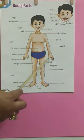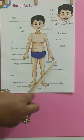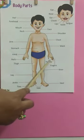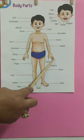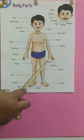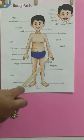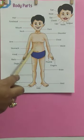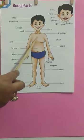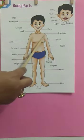Our hands consist of five digits. These five digits are four fingers and one thumb. Then we have our arms joined with our shoulders.